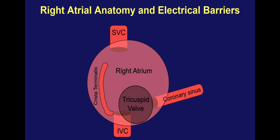The crista terminalis is a muscle ridge that runs down the lateral aspect of the right atrium, and in most people the muscle fibers along this ridge are oriented in the top-to-bottom direction, which means electrical signals tend to travel much better and faster downward or upward along its length, rather than transverse or across the crista terminalis. So this ridge structure acts essentially as a functional electrical barrier in most patients.